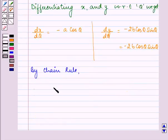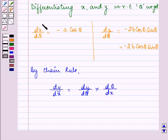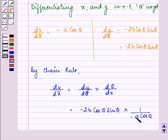We have dy by dx equal to dy by d theta into d theta by dx that is the reciprocal of dx by d theta. So we have minus 2b cos theta sine theta multiplied by 1 upon minus a cos theta. On simplifying.